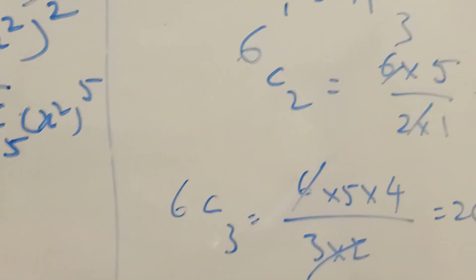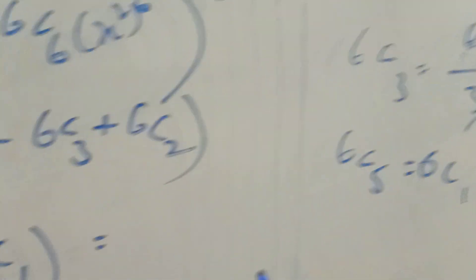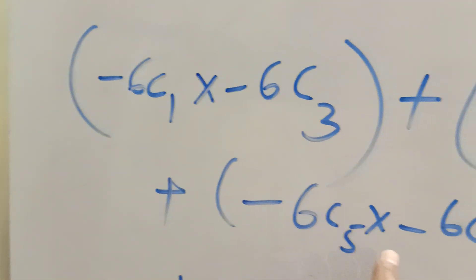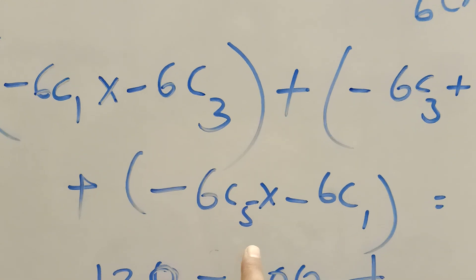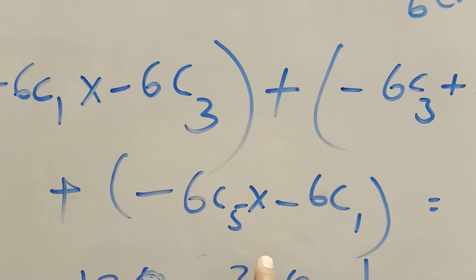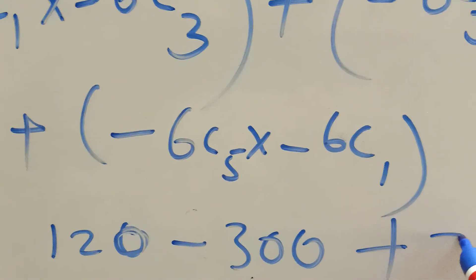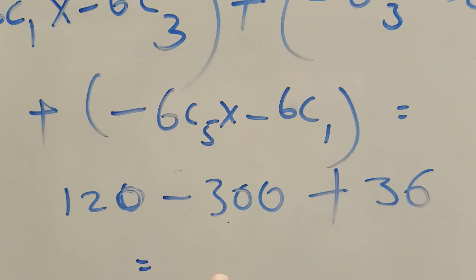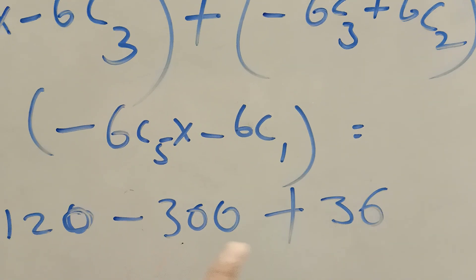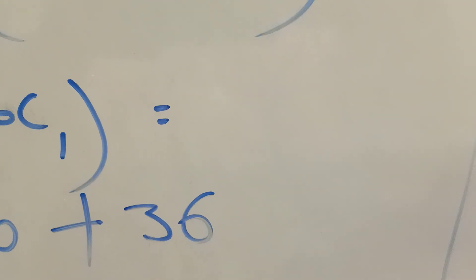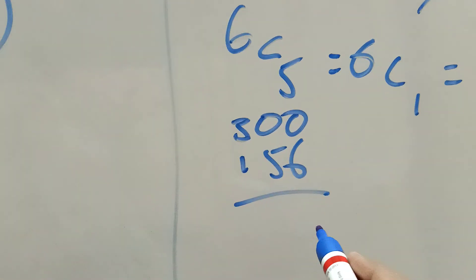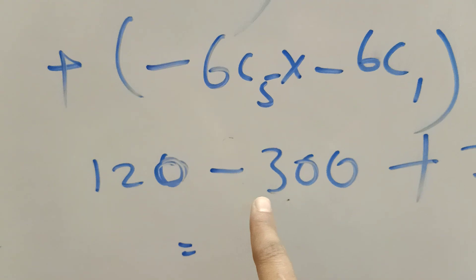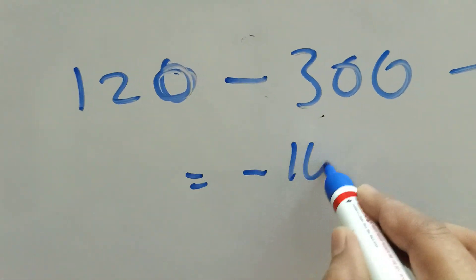So 6C3 value is 20, 6C2 is 15. Multiplication gives 15 times 20 equals 300, then minus 300. Then plus: 6 into 6 equals 36. Simplification: 120 plus 36 equals 156. Then 300 minus 156 equals 144, giving the answer minus 144.